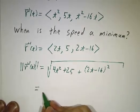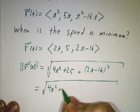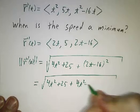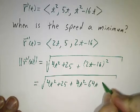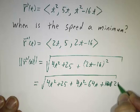And when we expand that out, this gives us 4t squared plus 25, plus 4t squared minus 64t plus 256.